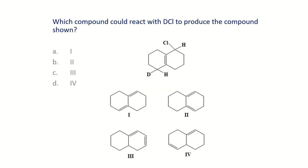A practice question: which compound could react with DCl to produce the shown compound? There are four options. Pause and think about which compound was the likely starting material.